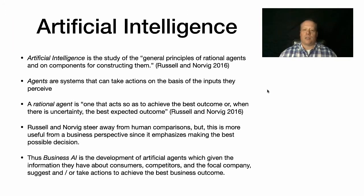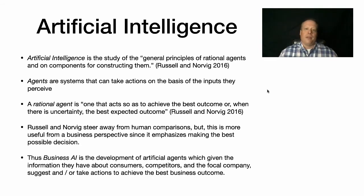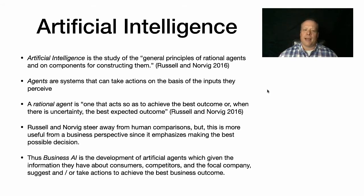So what is artificial intelligence? Russell and Norvig define artificial intelligence as the study of the general principles of rational agents and the components for constructing them. Agents in this context are systems that can take actions on the basis of the inputs they perceive — they look around the world, perceive some information, and take an action. A rational agent is one that acts so as to achieve the best outcome, or when there's uncertainty, the best expected outcome.